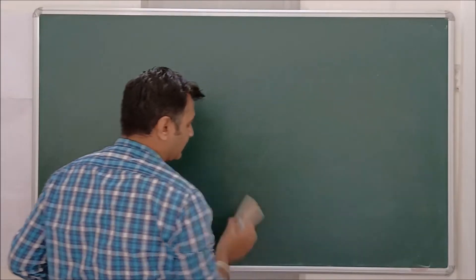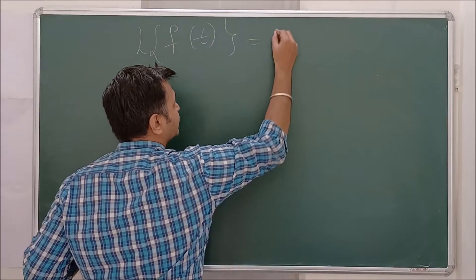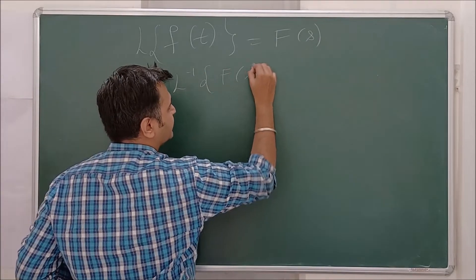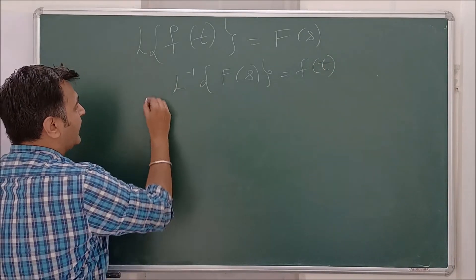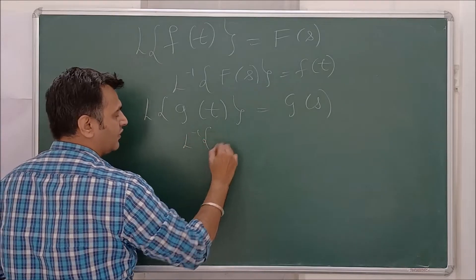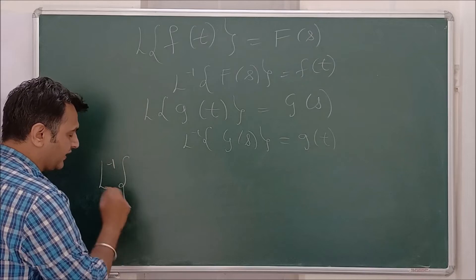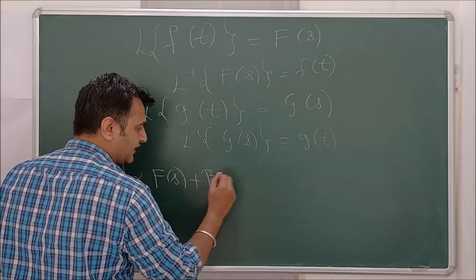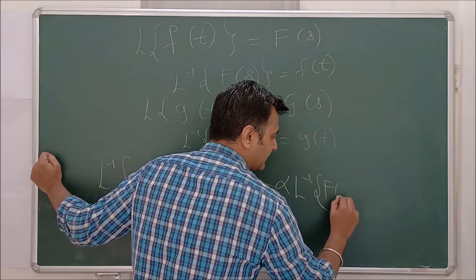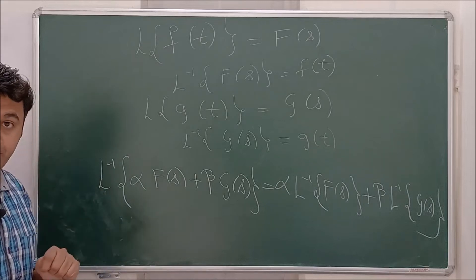First we will prove the linearity, then I will give you a counter-example. We have that if f(t) has Laplace transform F(s), then Laplace inverse of F(s) is f(t). Similarly, Laplace of g(t) is G(s) and Laplace inverse of G(s) is g(t). What we want to prove is that Laplace inverse of alpha·F(s) plus beta·G(s) equals alpha times Laplace inverse of F(s) plus beta times Laplace inverse of G(s), where alpha and beta are scalars.